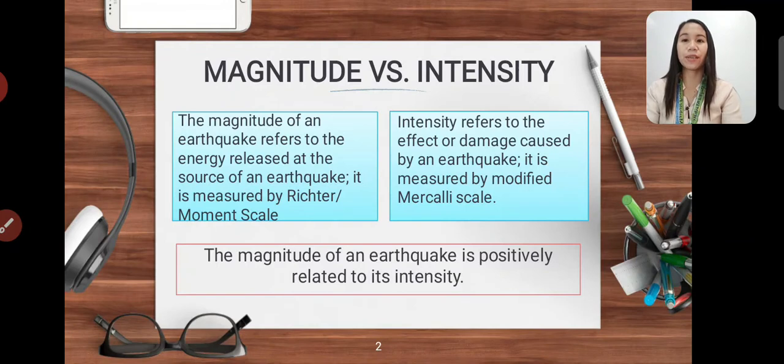Magnitude versus intensity. The magnitude of an earthquake refers to the energy released at the source of an earthquake. It is measured by Richter or moment scale. While intensity refers to the effect or damage caused by an earthquake, it is measured by modified Mercalli scale. The magnitude of an earthquake is positively related to its intensity.